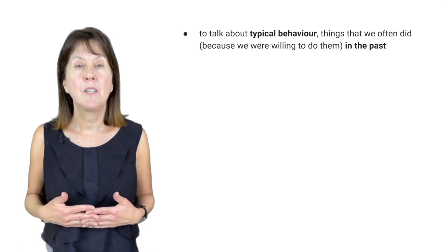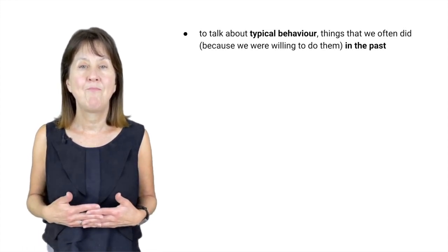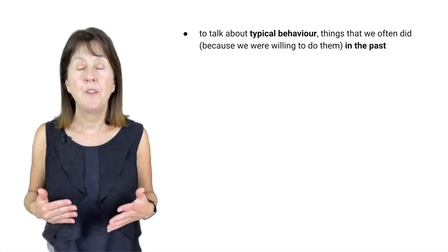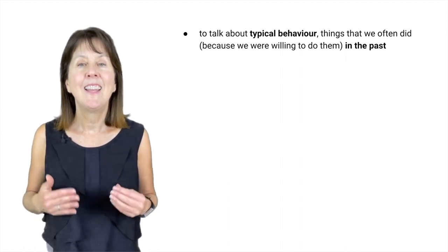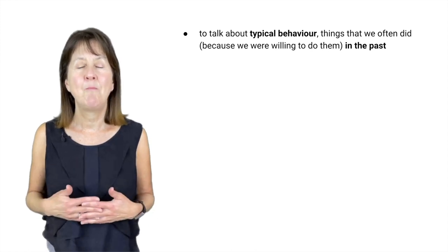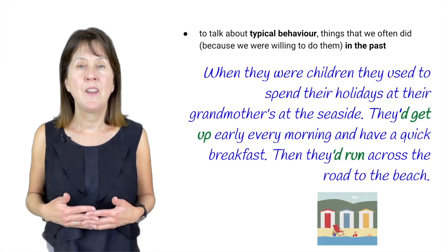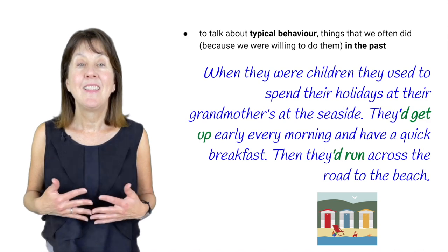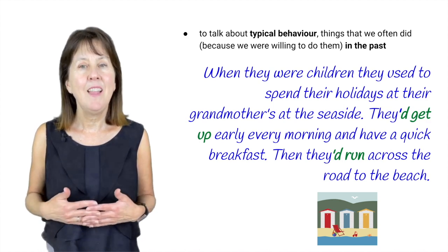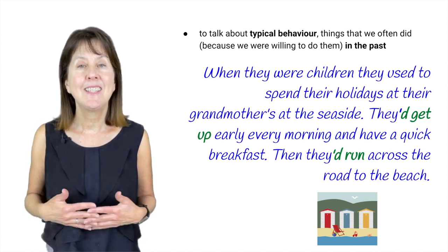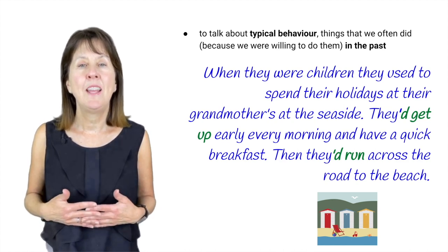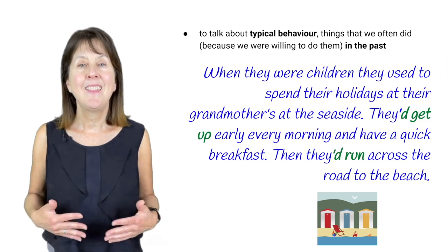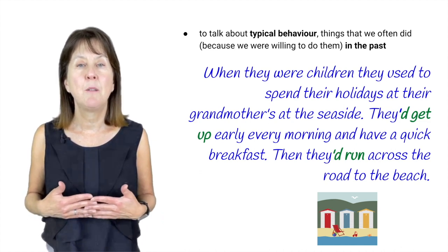We also use would, like will, to talk about typical behaviour — things that we often did because we were willing to do them, but in the past. For example, when they were children they used to spend their holidays at their grandmother's at the seaside. They'd get up early every morning and have a quick breakfast, then they'd run across the road to the beach.